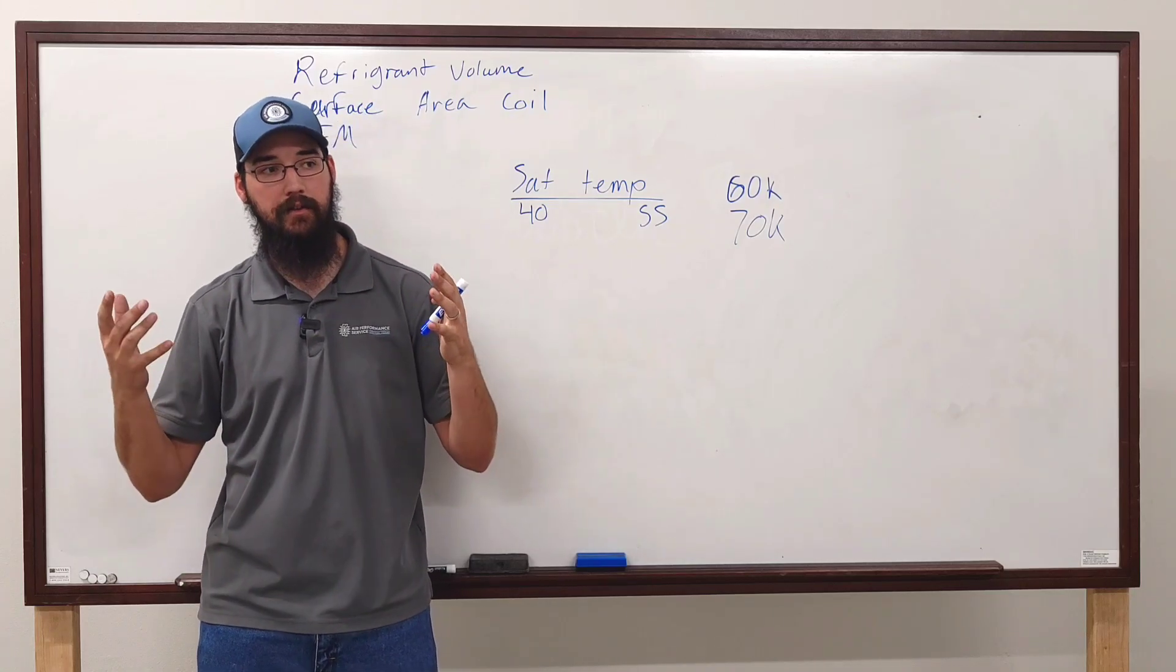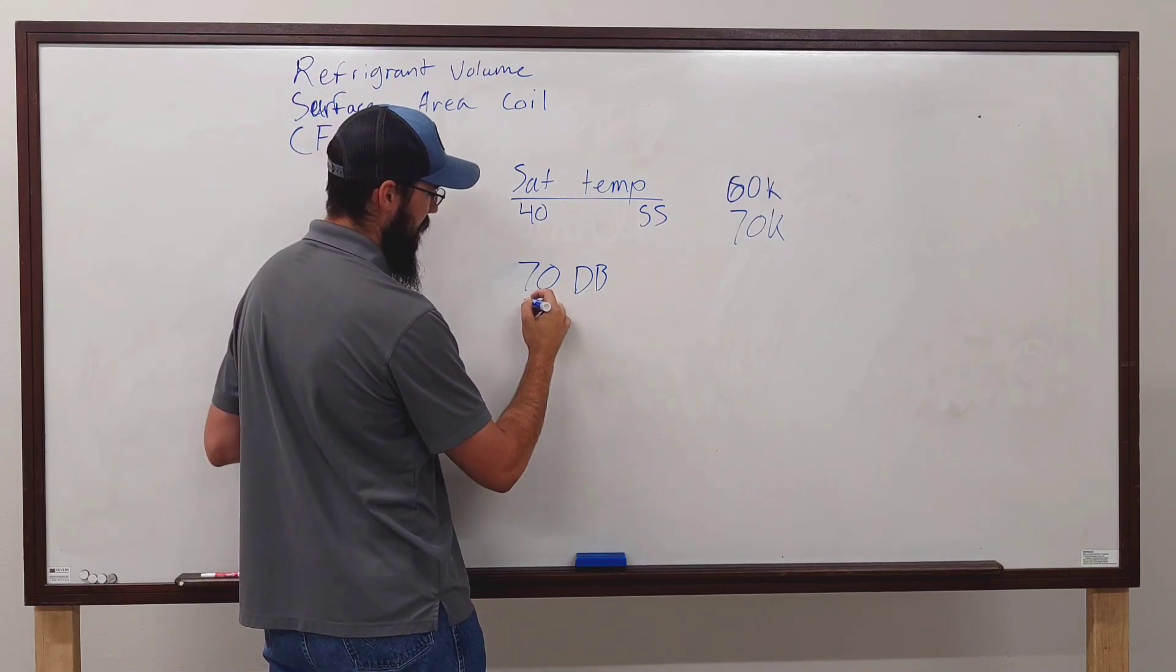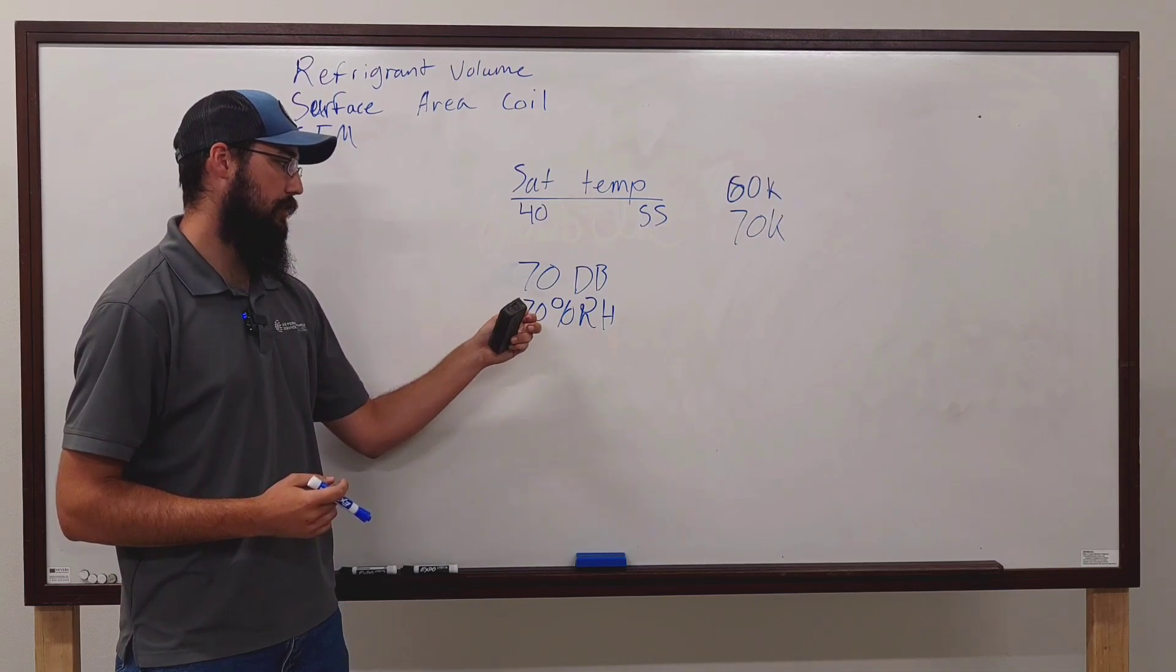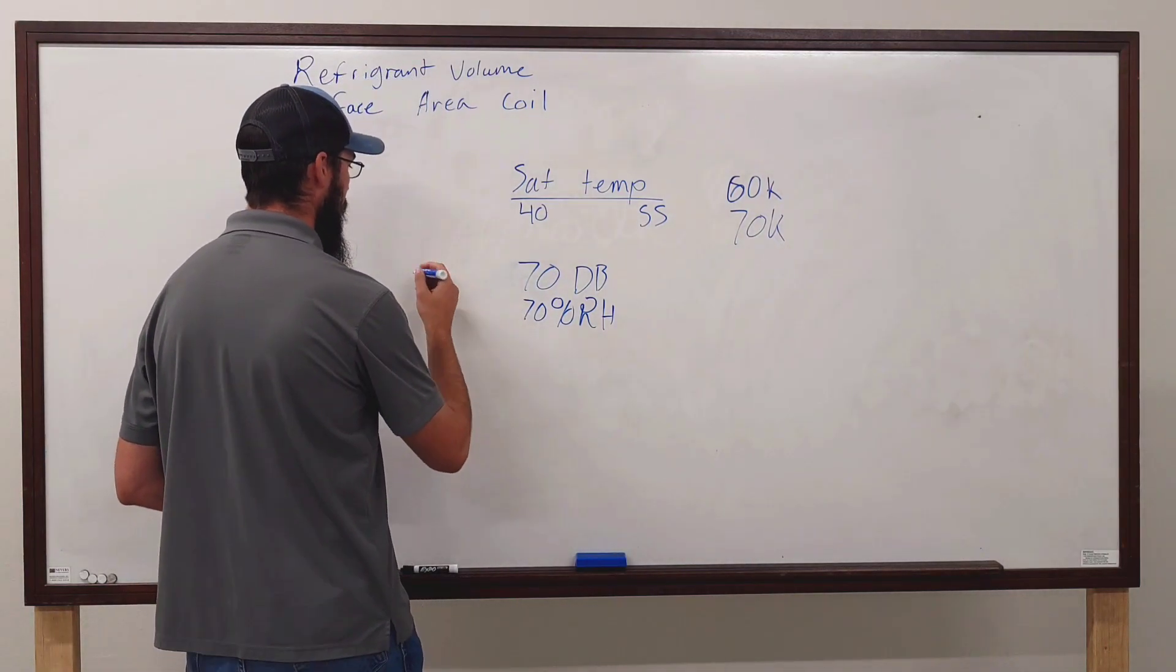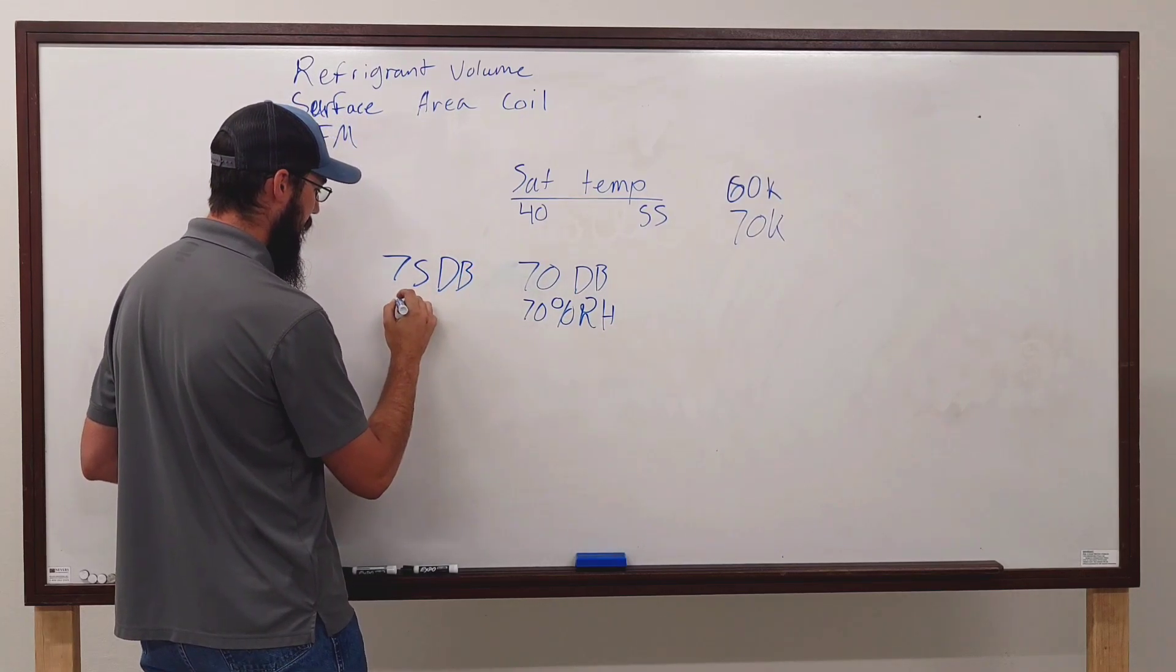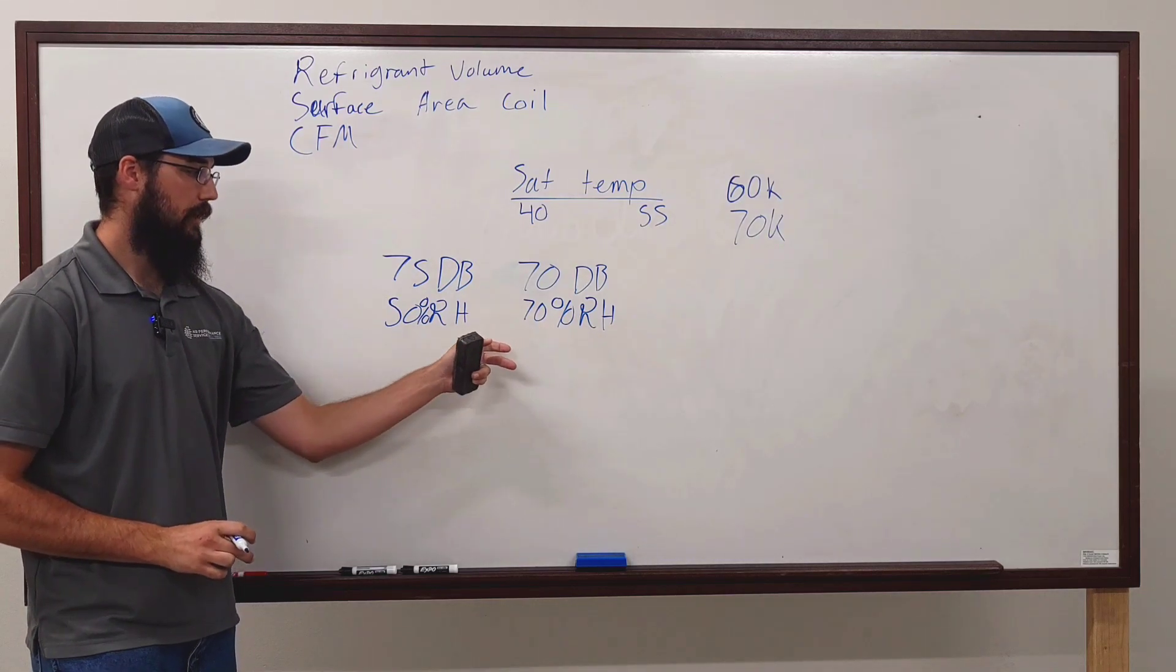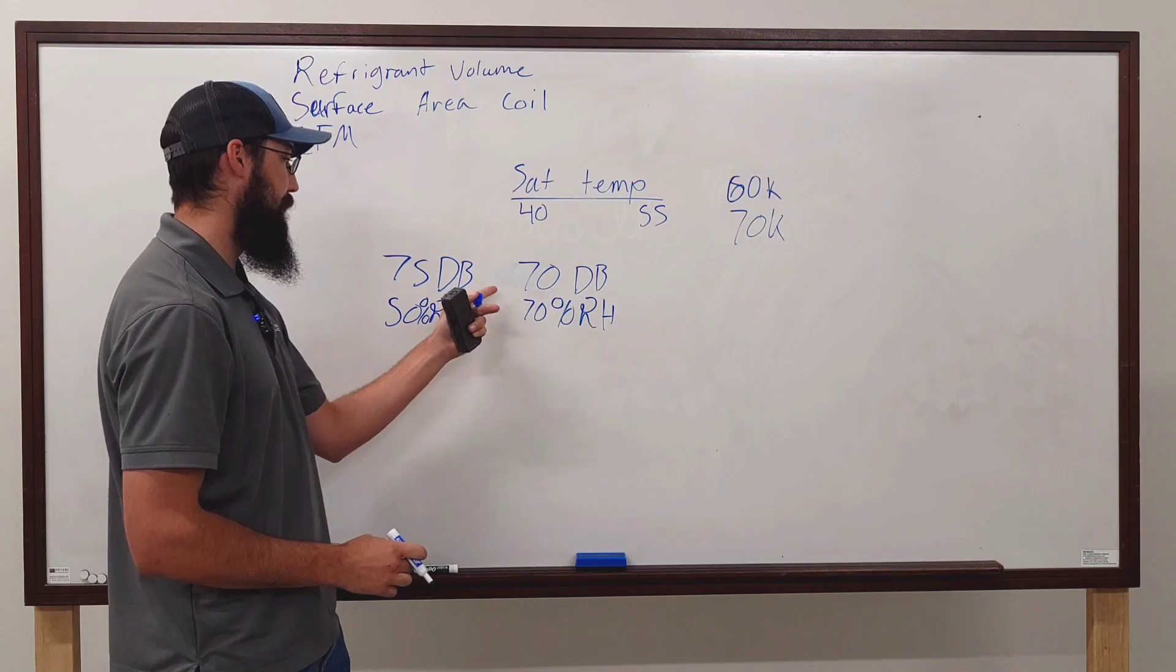So you had 70 degree dry bulb or sensible heat, but you had a 70 percent relative humidity. Are you going to have a higher or lower saturation with those readings? Let me take it a step further. If you had 75 dry bulb with a 50 percent relative humidity, which one of these would be higher? This one because of the humidity, right?